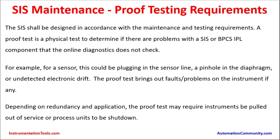Correction factors such as K-factor are analyzed during testing. For a sensor, issues could include plugging in the sensor line, a pinhole in the diaphragm, or undetected electronic drift. The proof test brings out these false problems in the instrument. If there is plugging in the impulse lines, readings will not be proper. Even if a transmitter reads correctly on calibration across its zero to 100% range, the transmitter may not be reading the actual process condition.